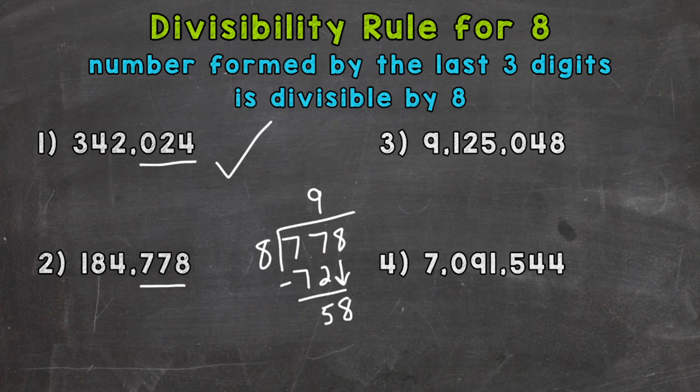So 58. How many whole groups of 8 out of 58? Well, 7. That gets us to 56, and we get a remainder of 2.